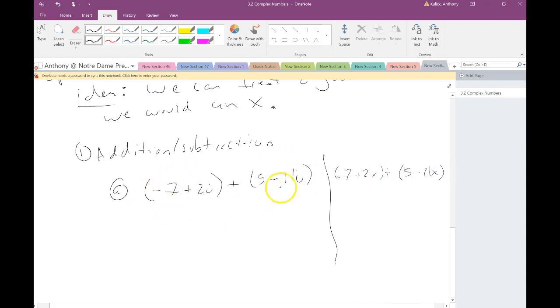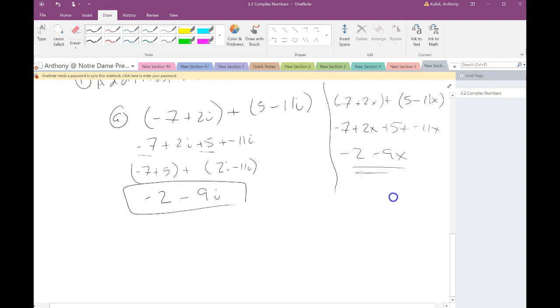So we're going to treat it the exact same way. Since this is addition and subtraction here, I can get rid of all these parentheses because they don't really matter. And write all the subtraction as plus and negative. And now what I'm going to do is just combine the like terms. So that's negative 2 minus 9i. Just like we would over here. So it works exactly the same way.